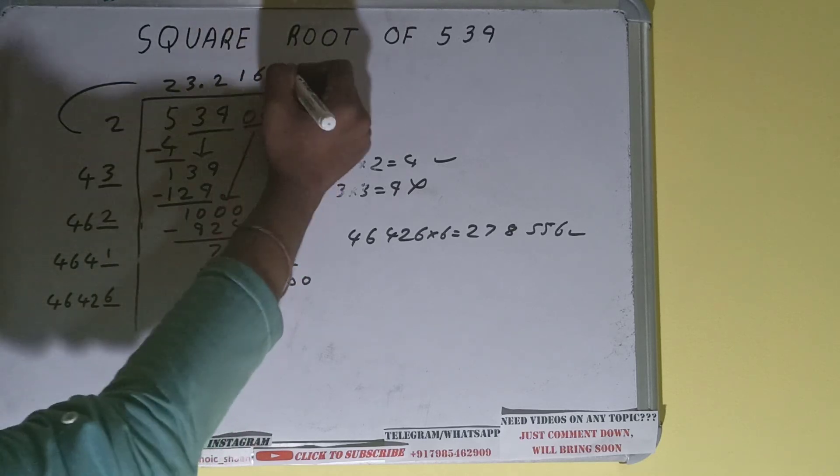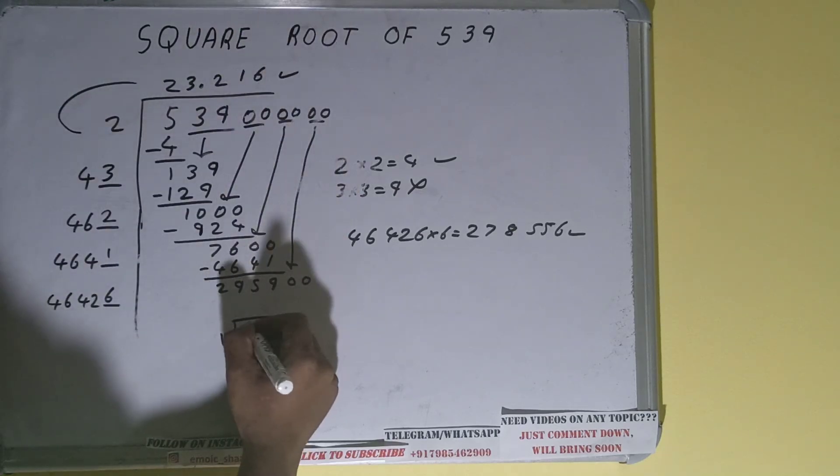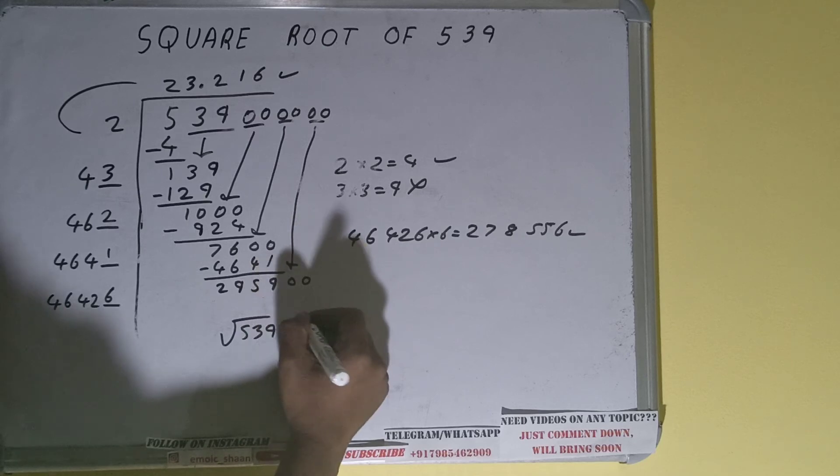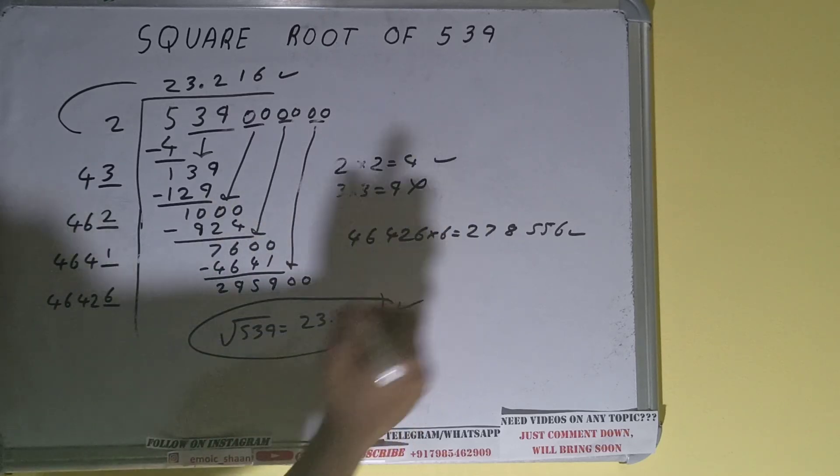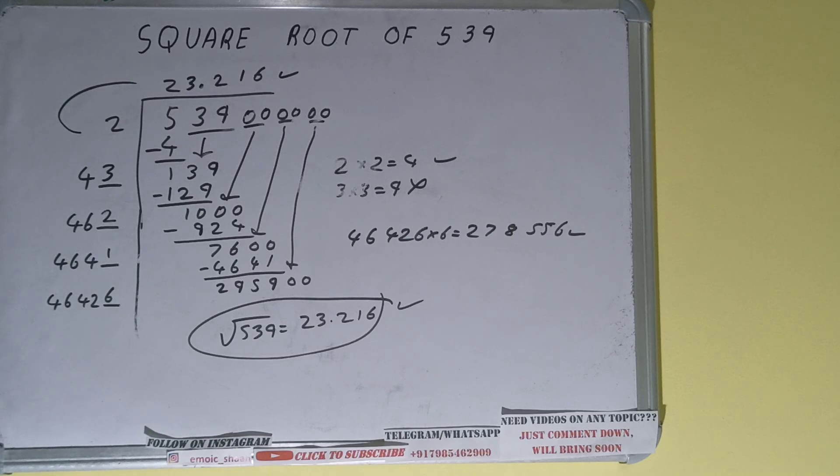...to calculate because we got the answer correct to three decimal places. So square root of 539 will be 23.216, and that would be the answer. So this is all. If you found the video helpful, please do the like button. Do consider subscribing, and thanks for watching.